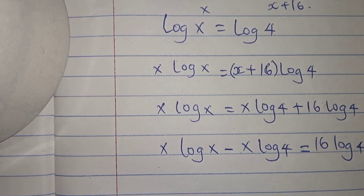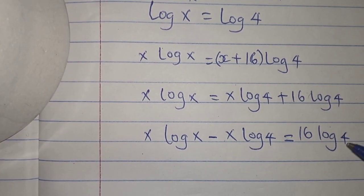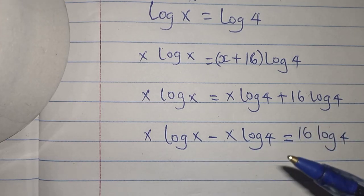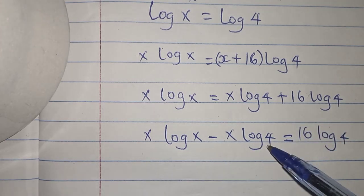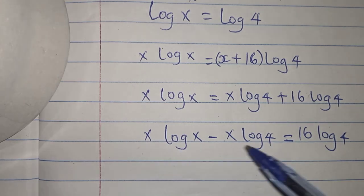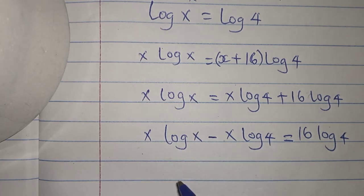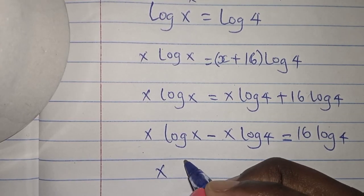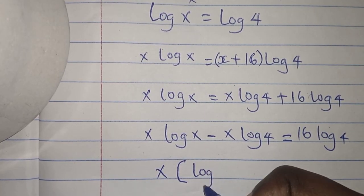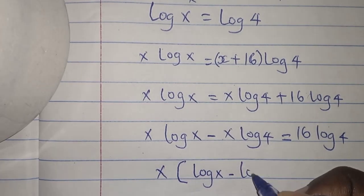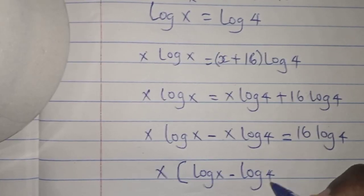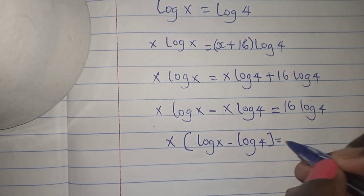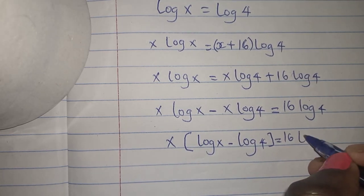Have you seen that? So this is the next step, bringing this x to be on the same side. So I'm going to factor out x. You can see x is our common letter here. I'm going to factor out x. So x into log x minus log 4. Then I'll close this bracket is equals to 16 log 4.